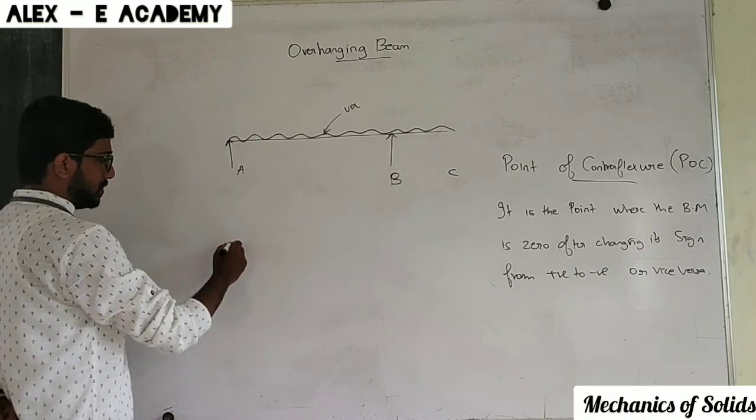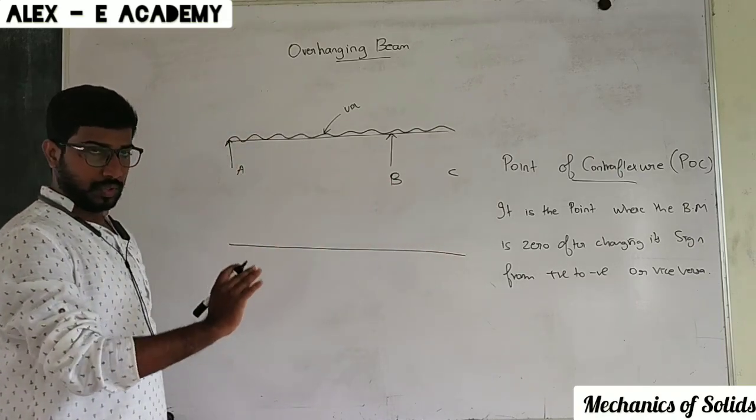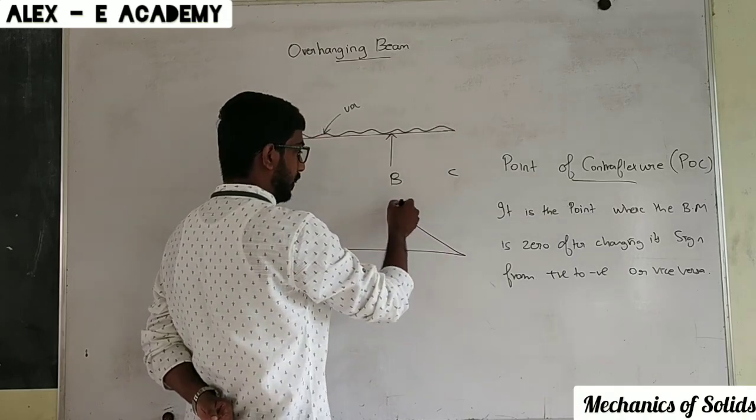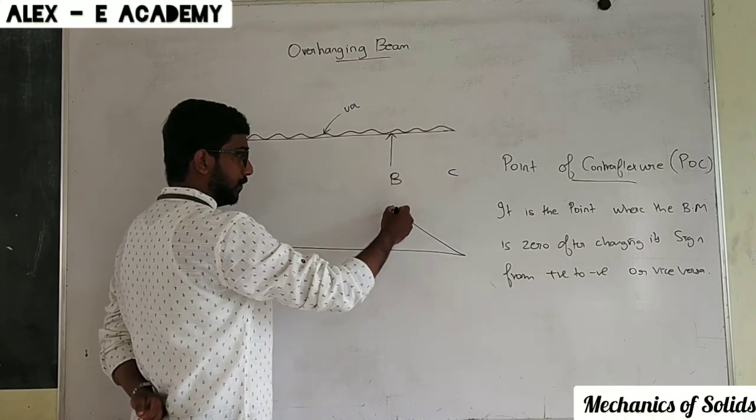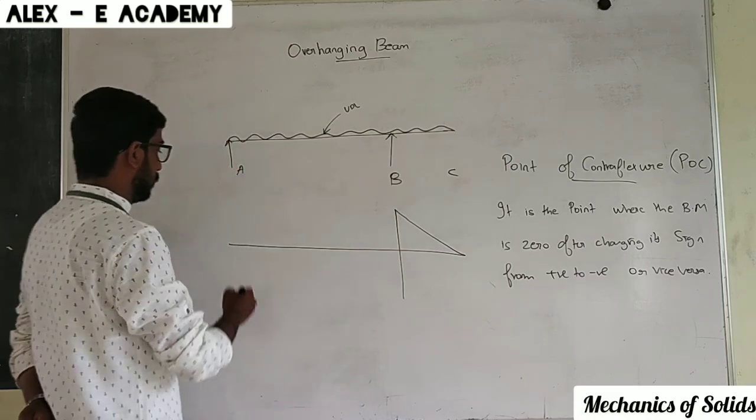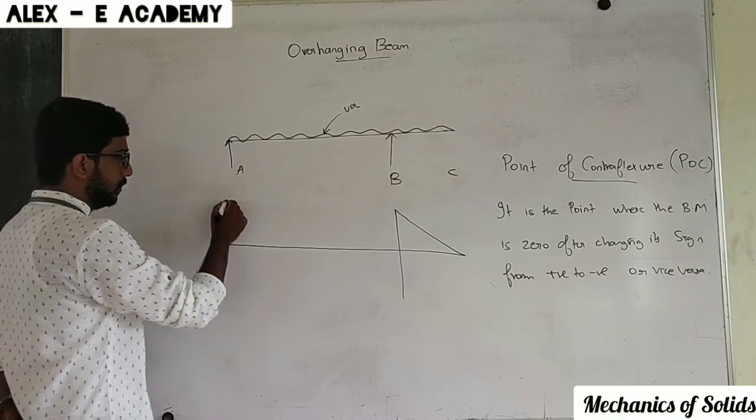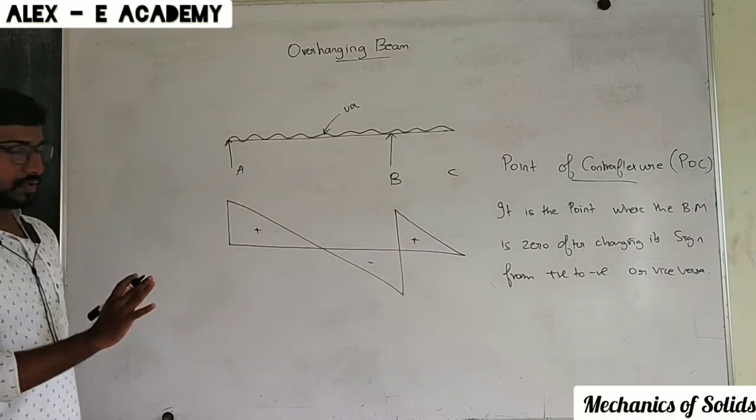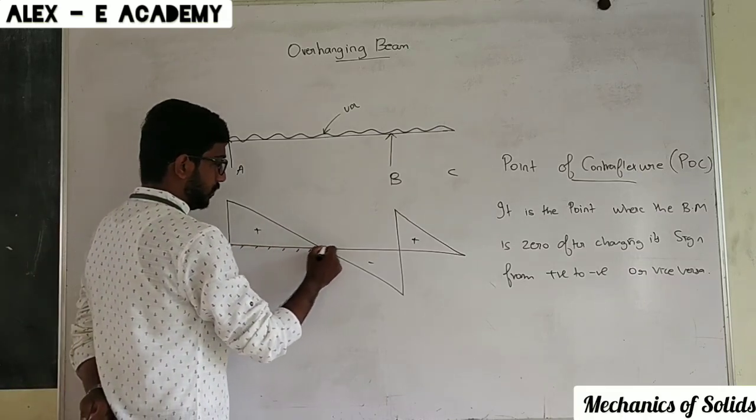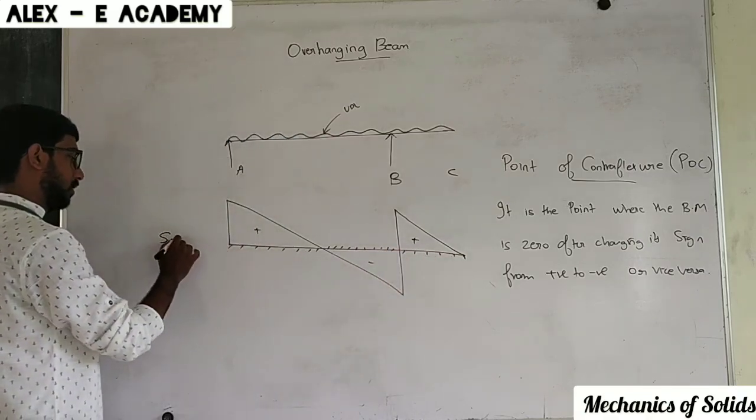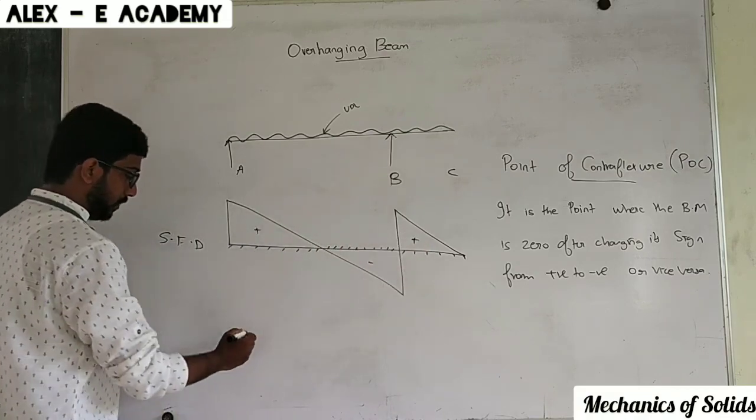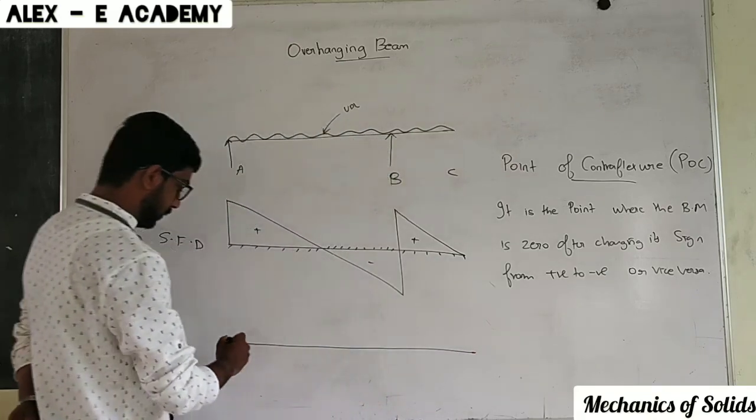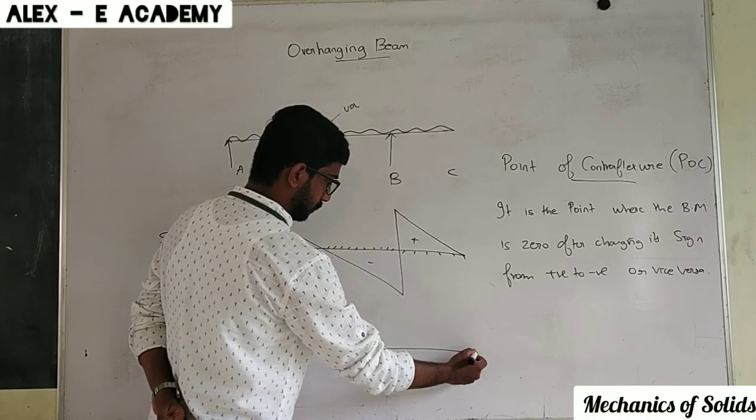Now for the overhanging beam shear force diagram - roughly I am discussing the shape here. Right side downward force, inclined straight line acting vertically downwards. Upwards is the angle, inverted straight line. That is the shear force diagram shape.